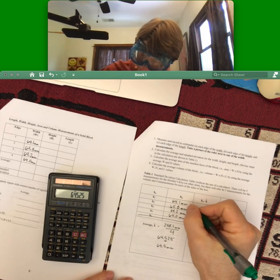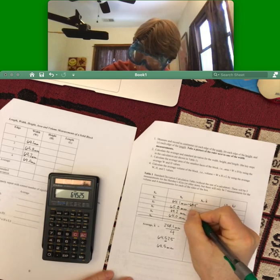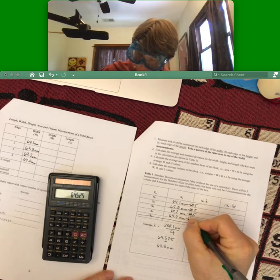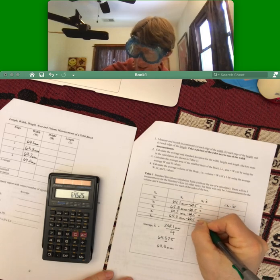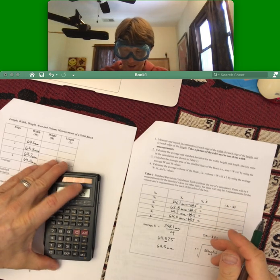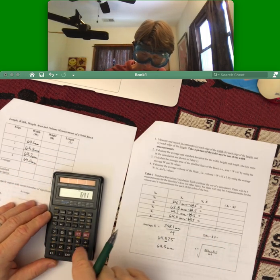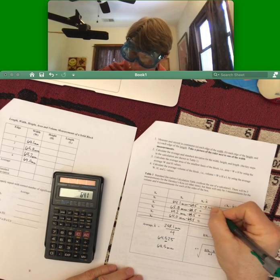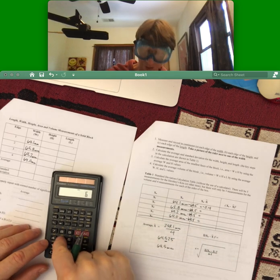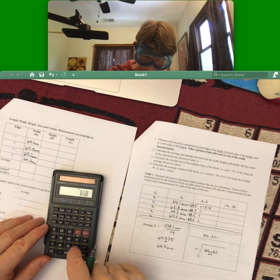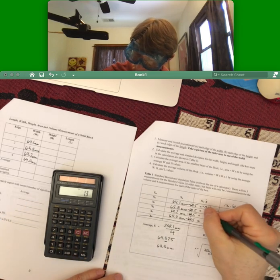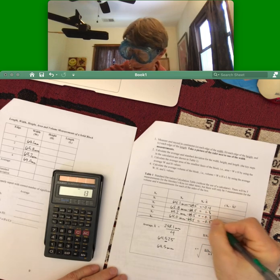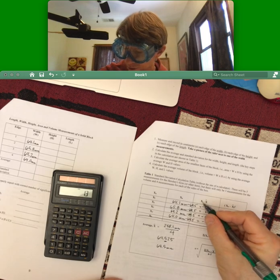Now, each of these is gonna be minus 64.5 to get the number that goes into this next area, which is gonna be 64.1. Zero point is gonna be negative 0.4. I'm gonna do this one on my calculator. 65.8 minus 64.5, I get 1.3 positive, minus 0.3, minus 0.5.